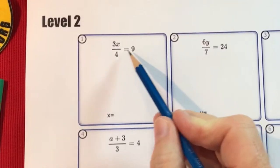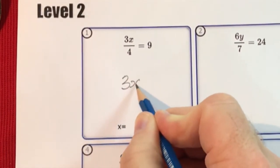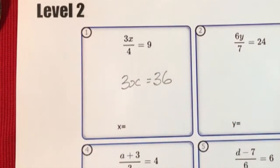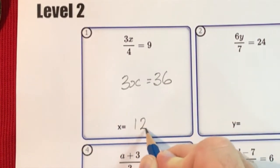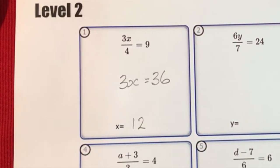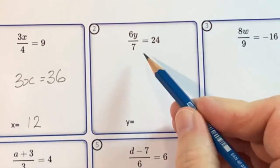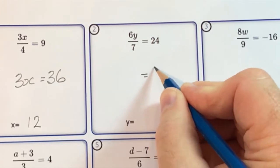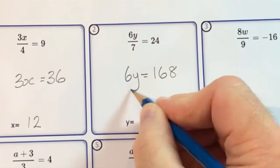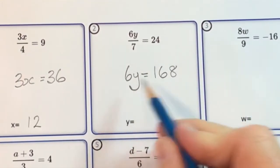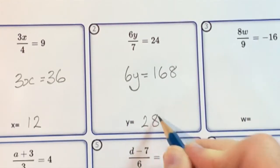First I'll multiply both sides by 4 to get rid of the fraction, giving me 3x equals 36. Then I'll divide both sides by 3 to give x equals 12. Question 2: multiply both sides by 7, giving 168 on the right and 6y on the left. Then divide both sides by 6, so y is equal to 28.